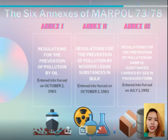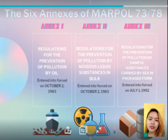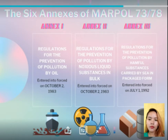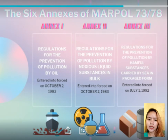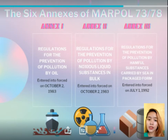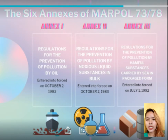Annex 2 covers regulations for the control of pollution by noxious liquid substances in bulk, which entered into force on October 2, 1983. It details the discharge criteria and measures for the control of pollution by noxious liquid substances carried in bulk. Some 250 substances were evaluated and included in the list appended to the convention. Discharge of residues is allowed only to reception facilities, and no discharge of residues containing noxious substances is permitted within 12 miles of the nearest land.